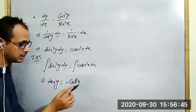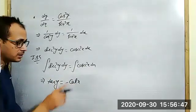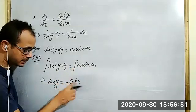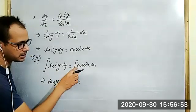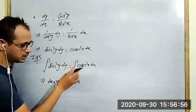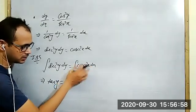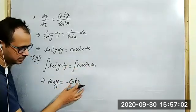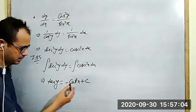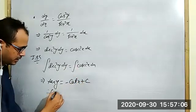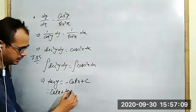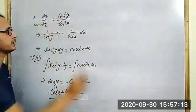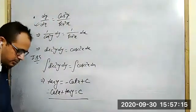We get minus cotangent y minus the derivative, which gives us minus cotangent x plus cotangent x. So cotangent x for the integral of cosecant squared x dx. We get cotangent y minus cotangent x plus constant, which is the required solution.